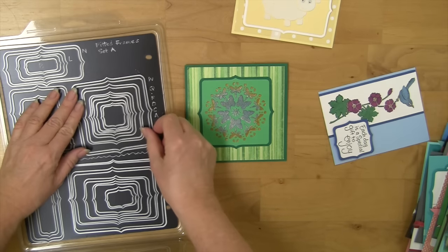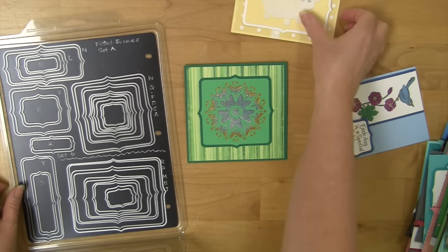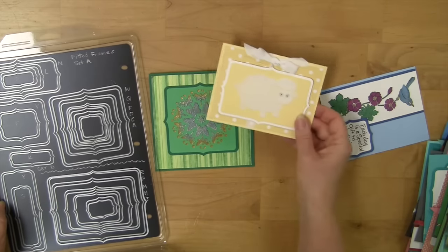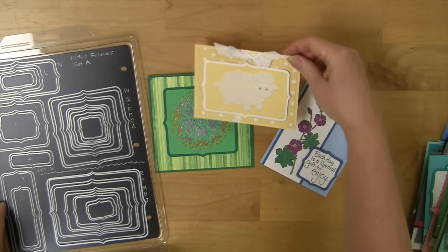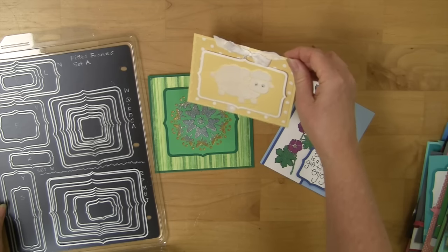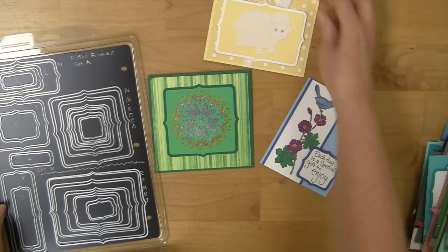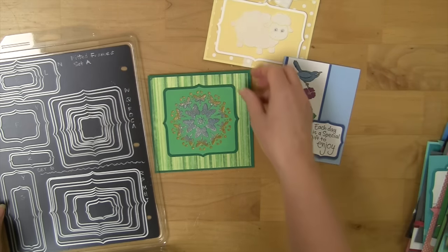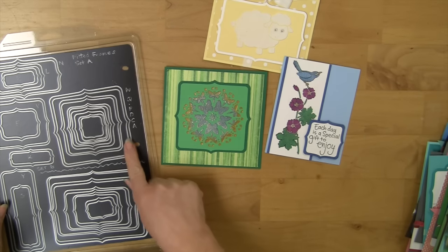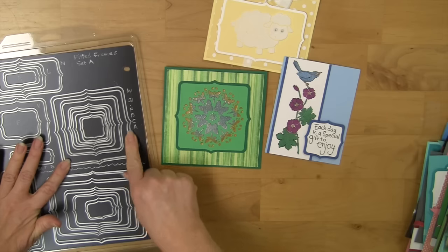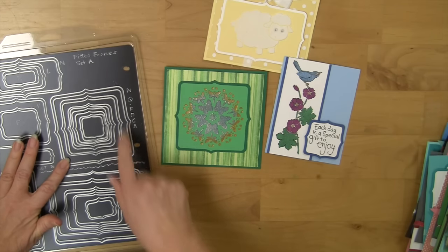So here I've got several of our Dreamweaver stencil designs that were used on these cards. And you can see where you'll get a nice fit for any number of different sizes. And on this one, this is some of the new duo stencils and they work nicely with the largest square which happens to be the W.